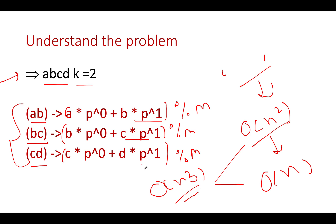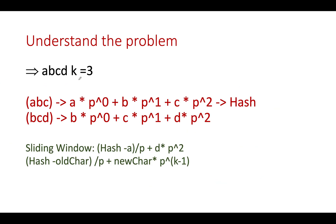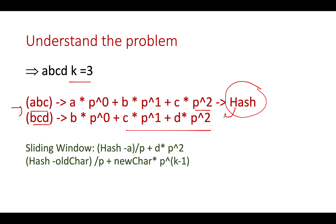We can optimize using the sliding window technique — using previously computed hash values to generate subsequent hashes. Let's assume k=3 to better illustrate. The two substrings are 'abc' and 'bcd'. Hash('abc') = a·p⁰ + b·p¹ + c·p². Hash('bcd') = b·p⁰ + c·p¹ + d·p². Can we use the first hash to derive the second? Yes.